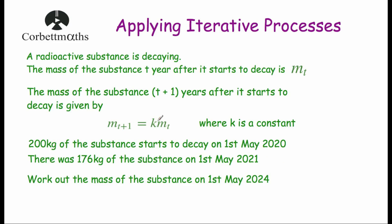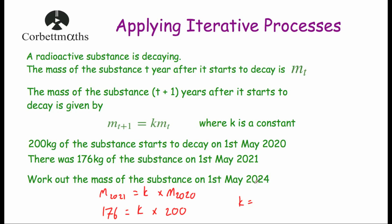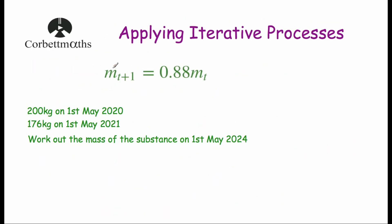First, we want to work out K. We know the mass in the next year equals K times the mass in the year before, so the mass in 2021 equals K multiplied by the mass in 2020. That gives us 176 equals K times 200. Dividing 176 by 200, we get K equals 0.88. So our iterative formula is MT+1 equals 0.88 times MT.